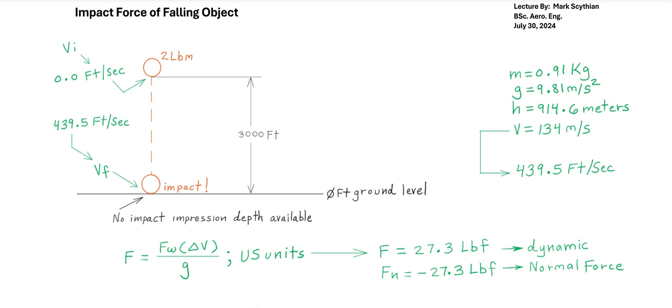That would be negative 27.3 pounds force upward, and we can call this the reaction force in the opposite direction. If we drew a free body diagram, we have positive 27.3 pounds force upon impact, and the practicality is the reactionary force. In actuality, it is an upward force.